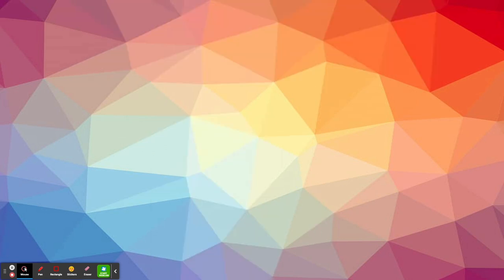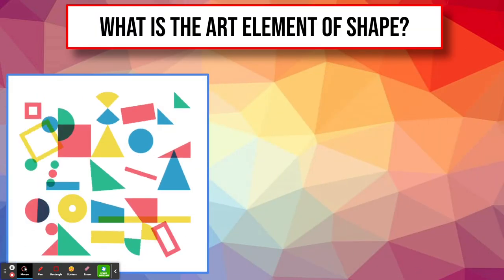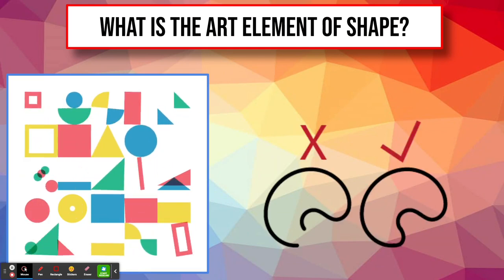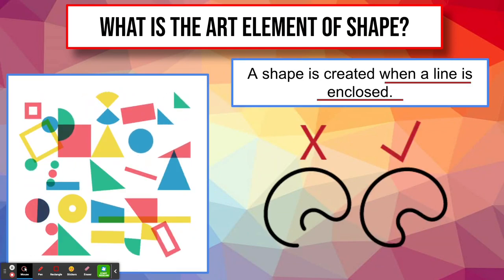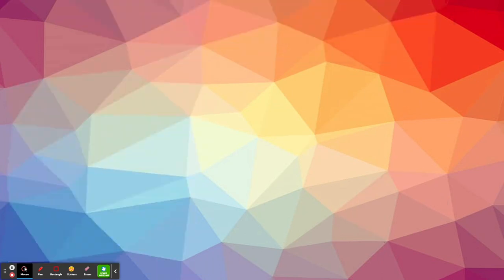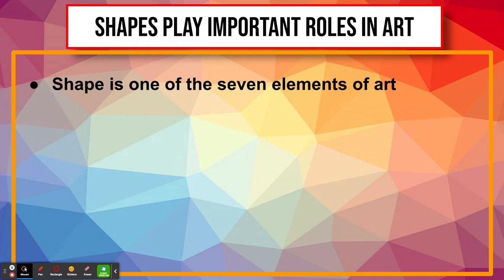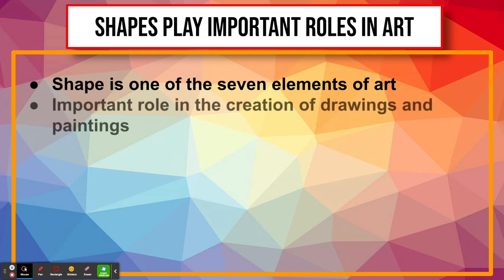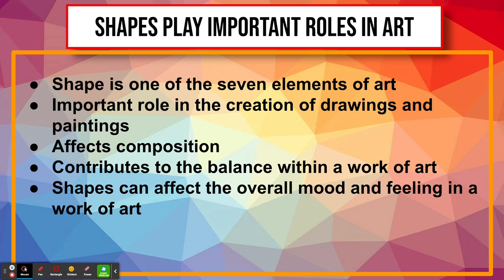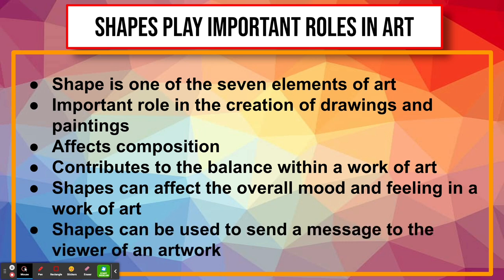So what is the art element of shape? Simply put, shape is created when a line is enclosed — or when two ends of a line join together. It's important to know the roles that shapes can play in art. Shape is one of the seven elements of art. Shapes play an important role in the creation of drawings and paintings, affect composition, contribute to balance within a work of art, and can affect the overall mood and feeling in a work of art. Finally, shapes can be used to send a message to the viewer.